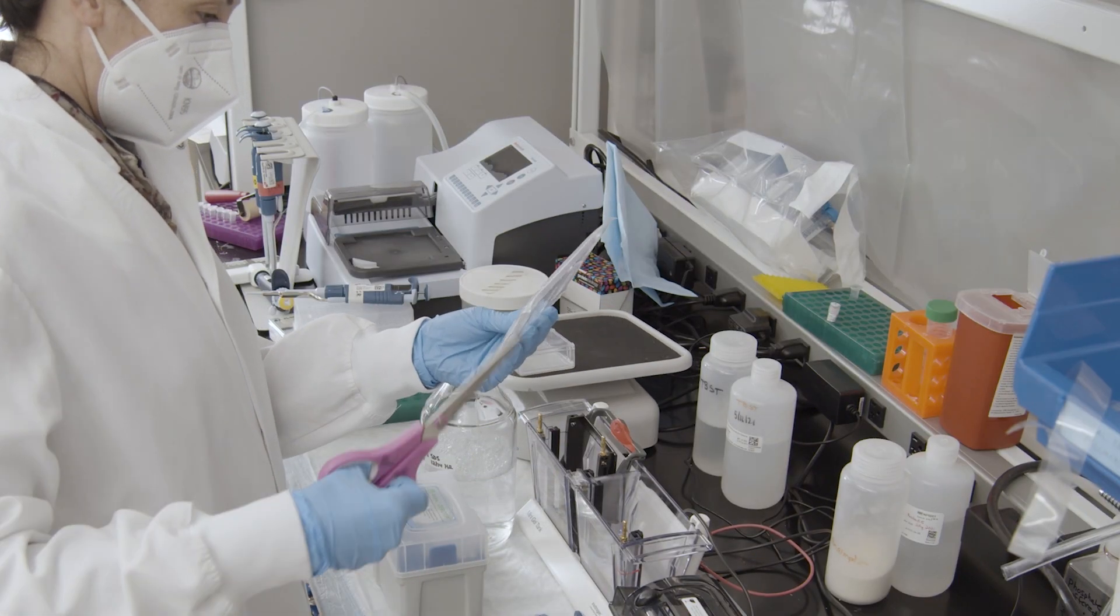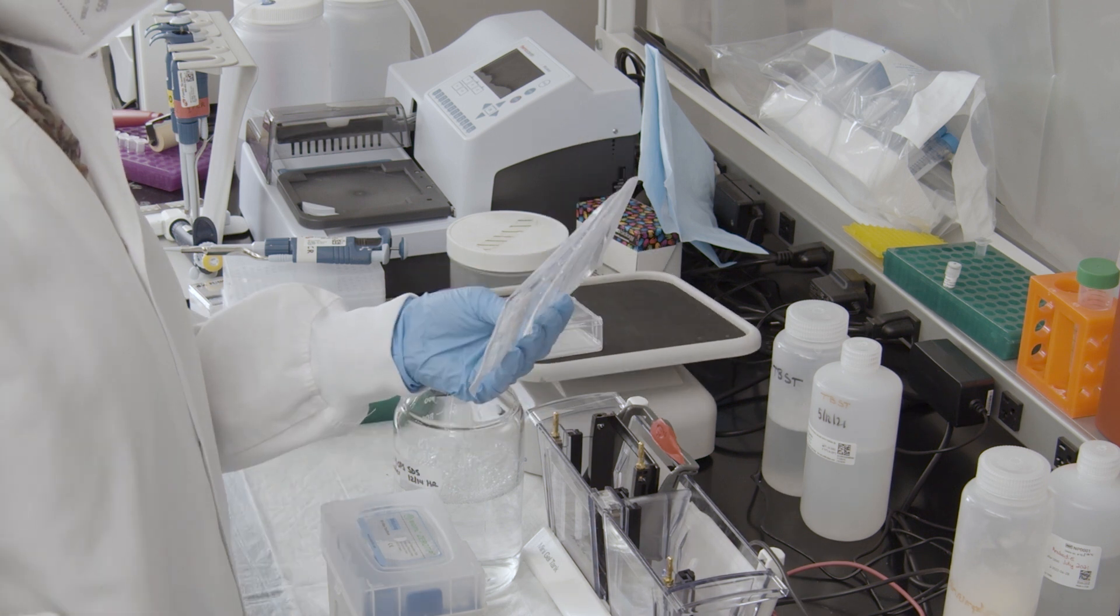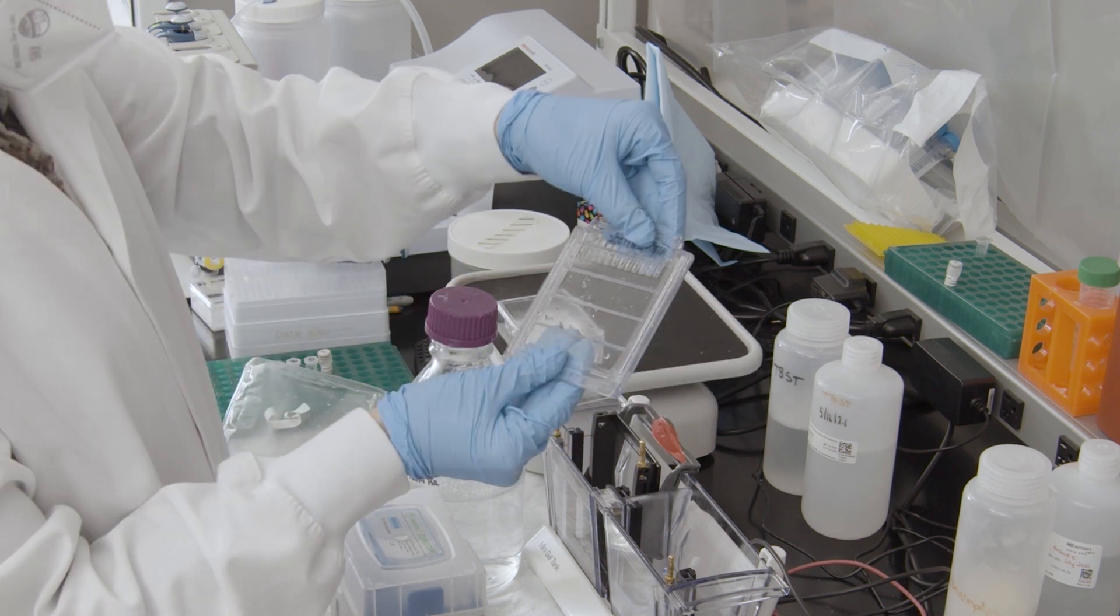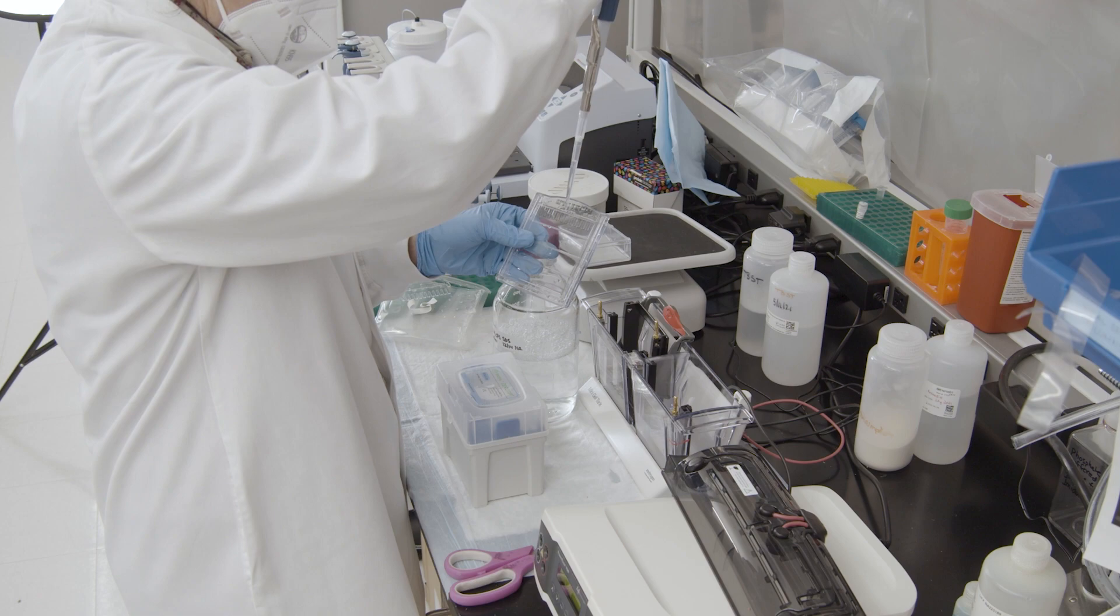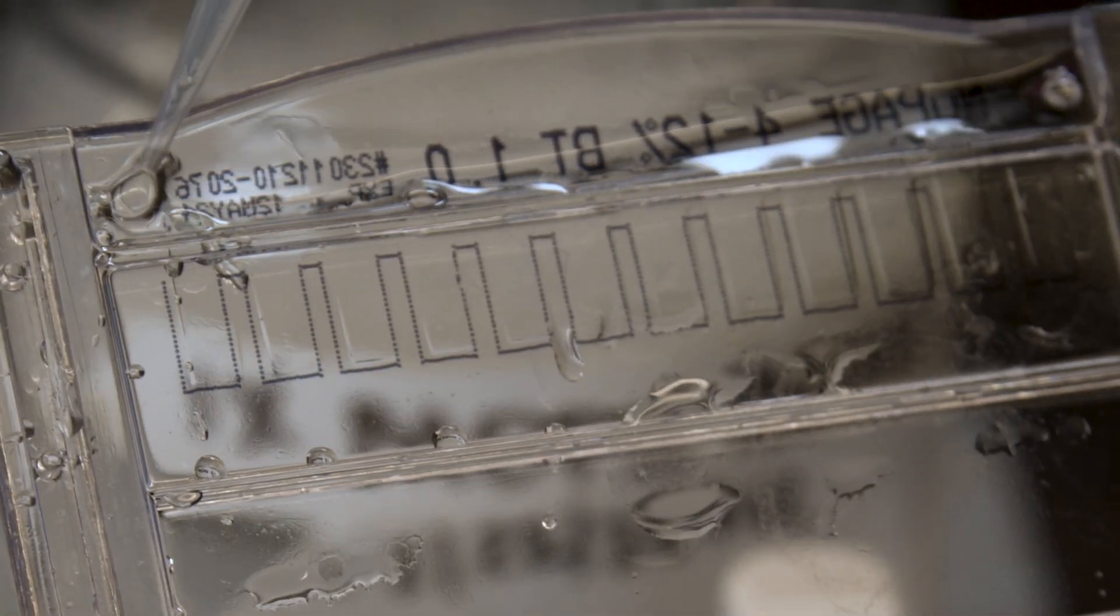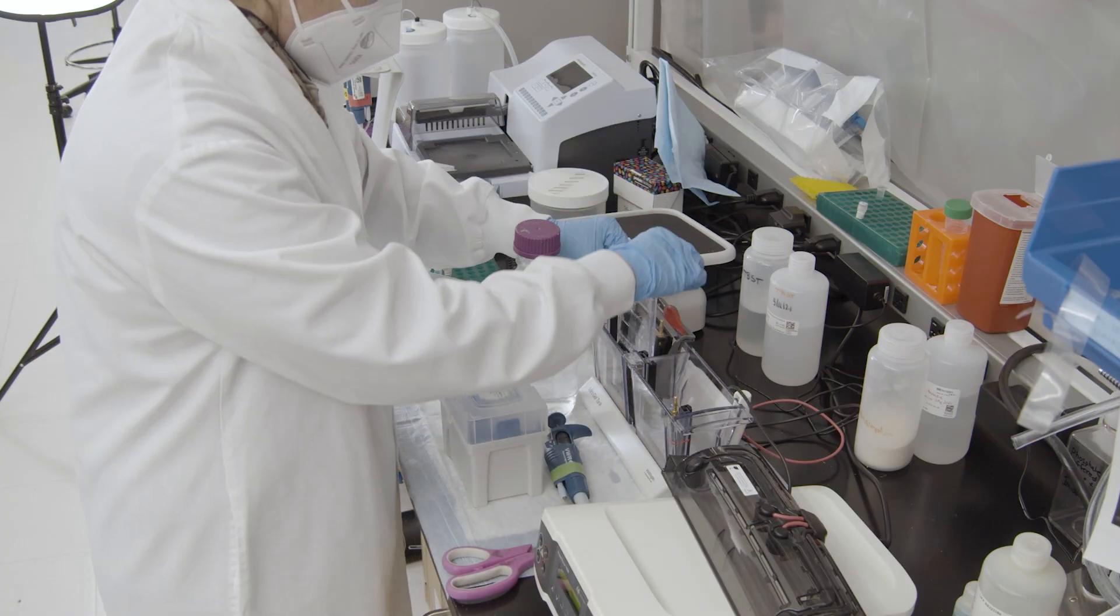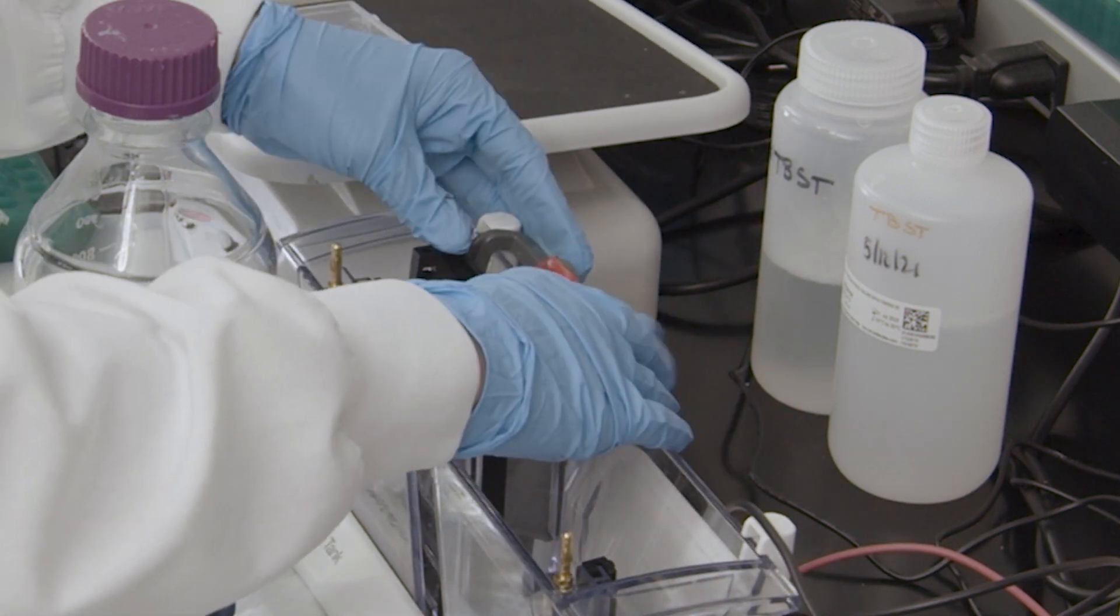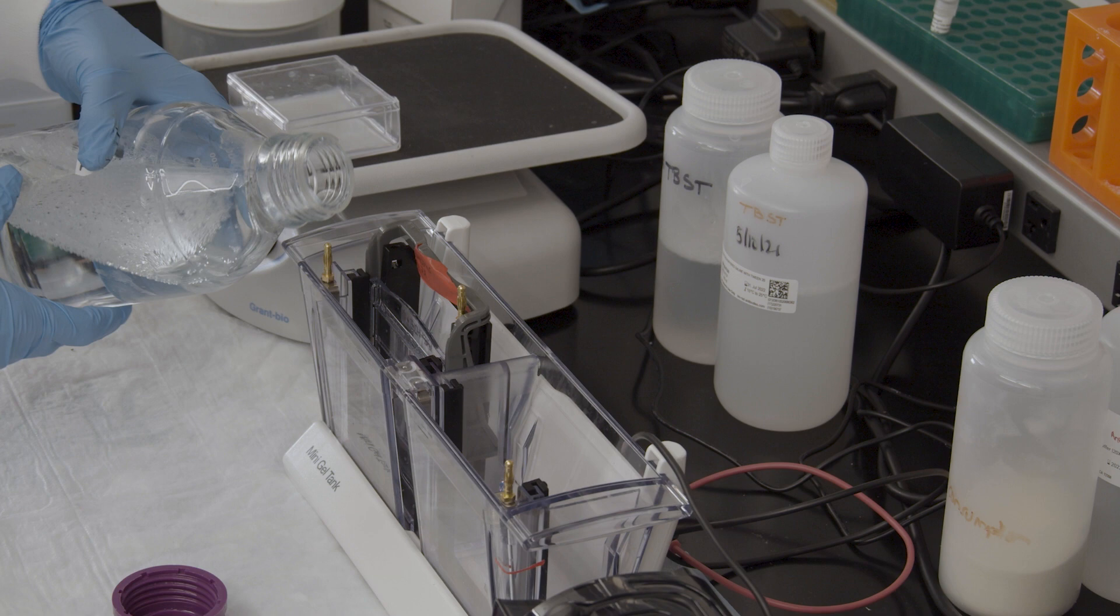SDS page gels can be hand cast or purchased precast from a variety of vendors. For both gel types, remove any packaging or casting material in combs. Use a pipette and tip to gently rinse the wells in the running buffer, removing the packing liquid and any air bubbles. Gently load the gel into the electrophoresis chamber and lock it in place. Fill the chamber to the fill line with the running buffer.